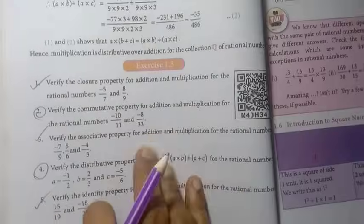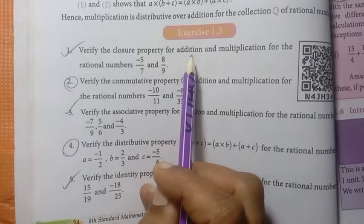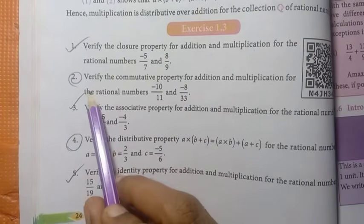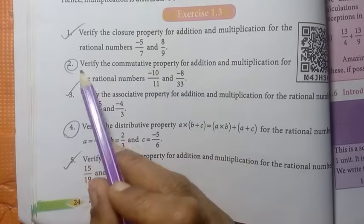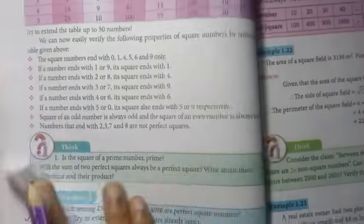Next, page 24, exercise 1.3. First one: verify the closure property for addition and multiplication. Then commutative property, second one is important. Then third, four, five—all of these are important in exercise 1.3.